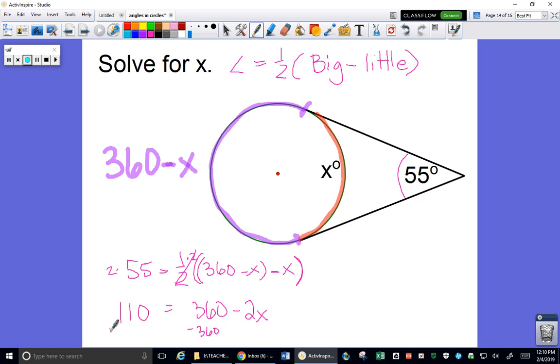Then I subtract 360 from both sides. Negative 250. Well that's okay because this is a negative 2x on that side. So now when I divide both sides by negative 2, my negatives cancel each other out, and I get a positive 125 degrees as a value for x. So that's that little arc in this circle.